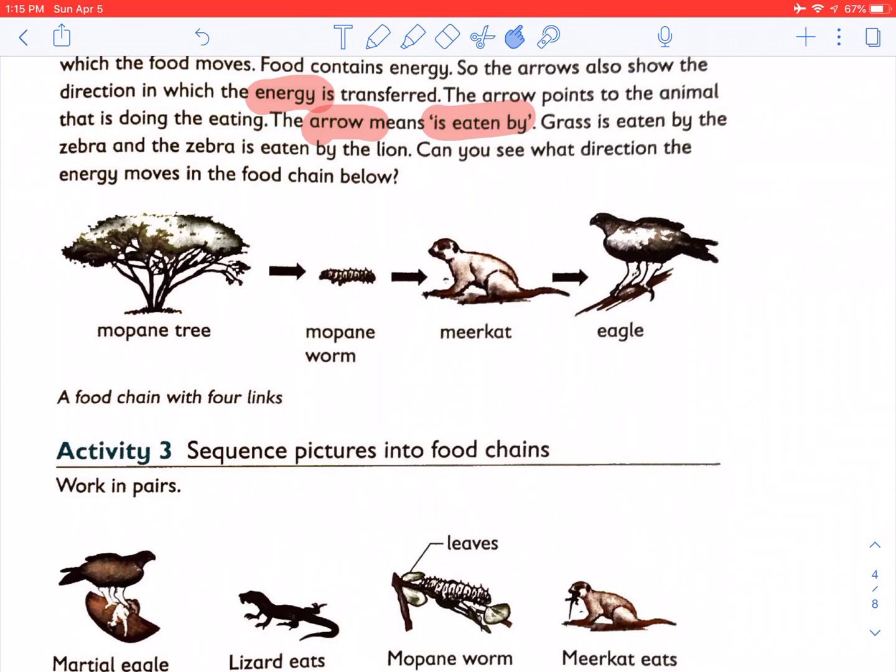The picture shows a food chain with four links. The mopani worm eats the leaves of the mopani plant. The meerkat eats the mopani worm, and the eagle eats the meerkat.